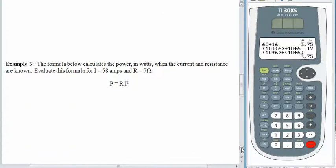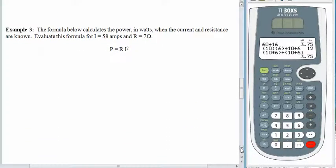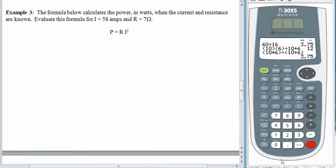Okay. New example. We have a formula that calculates power if we know the current and the resistance. So our job is to evaluate this formula where I equals 58 amps and R is equal to 7 ohms. Alright. Power is equal to 7. The R is next to the I so we know things are being multiplied. Times 58 and the 58 is being squared.